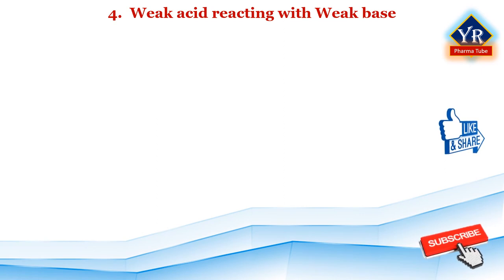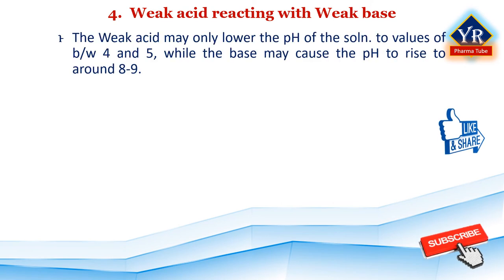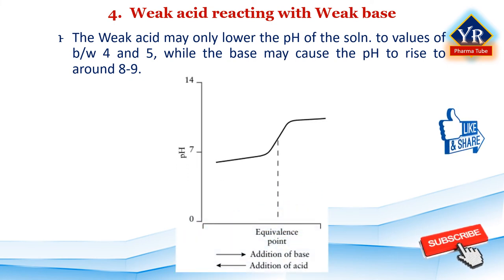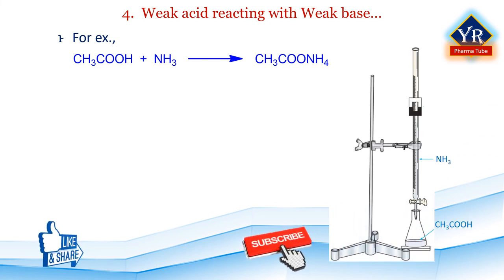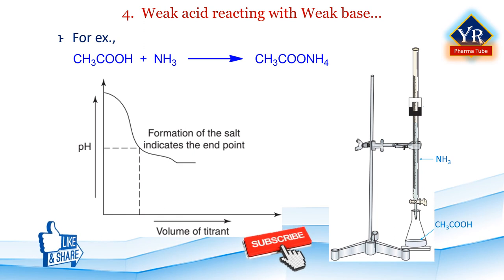Weak acid reacting with weak base: the change in pH is not so dramatic in this situation, since the weak acid may only lower the pH to values of about 4 to 5, while the weak base may only cause the pH to rise to around 8 to 9. The equivalence point, even if characterized by a narrower change in pH, is still identified by a rapid change in pH. For example, a weak acid is partially dissociated and neutralized with ammonia, a weak base. The weak acid is taken into a conical flask with an appropriate indicator and titrated with the weak base until a color change appears. Plotting pH versus volume of titrant shows a continuous, gradual decrease in pH with no rapid pH change observed; the endpoint is indicated by formation of the salt ammonium acetate.